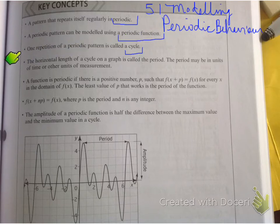One repetition of a periodic pattern is called a cycle. So that's basically where we would be able to model one pattern, and one cycle is one pattern.